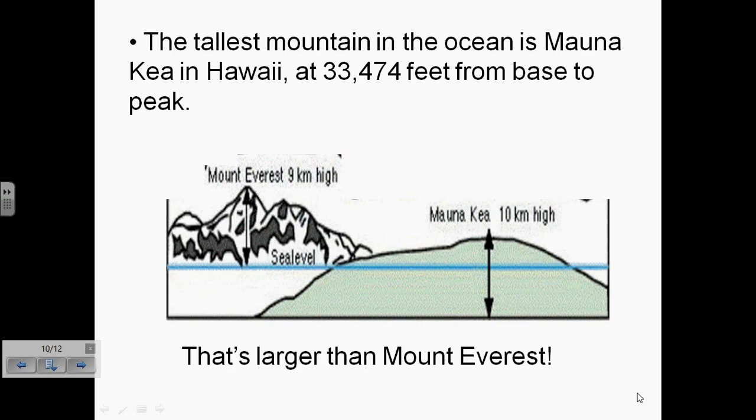Next, you have the tallest mountain in the ocean, which is represented by the Mauna Kea in Hawaii. It's estimated to be about 33,474 feet from base to peak. Interestingly enough, that's larger than Mount Everest, but it's an underwater mountain. So of course it represents the tallest mountain, but it's the tallest mountain in the ocean.